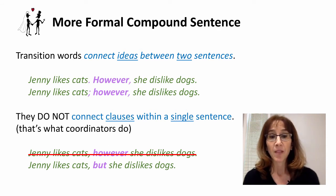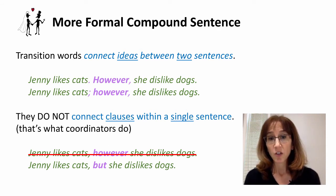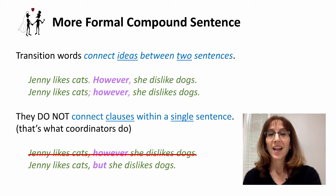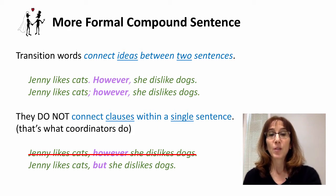So if I were to say 'Jenny likes cats, however, she dislikes dogs,' that would be wrong — I can't say that. If I want to use that kind of structure, I would have to use 'but.' I could use 'however' if I put a period at the end of the first part, then the transition word and a comma. So I can use the punctuation like you see in the sentences above, but I cannot use the punctuation like you see below.